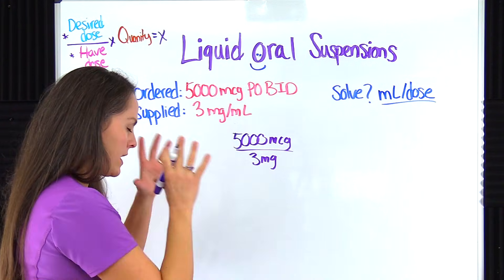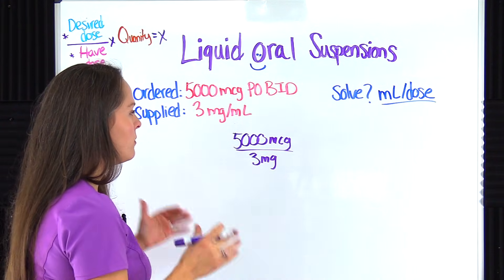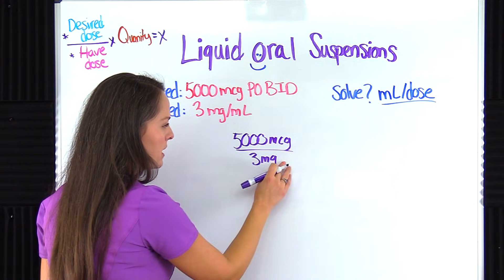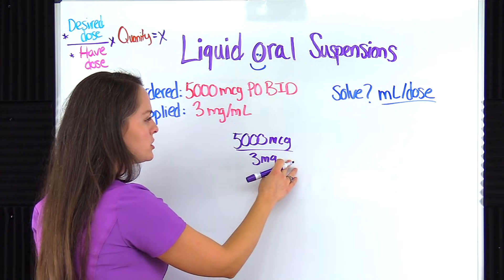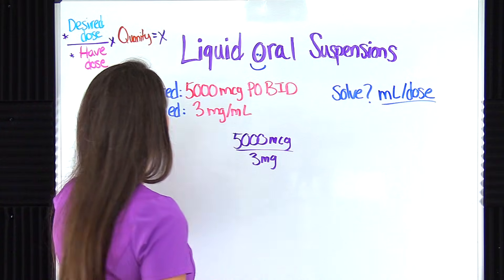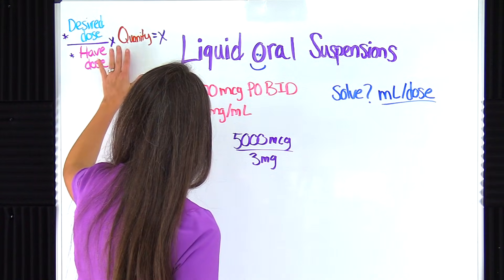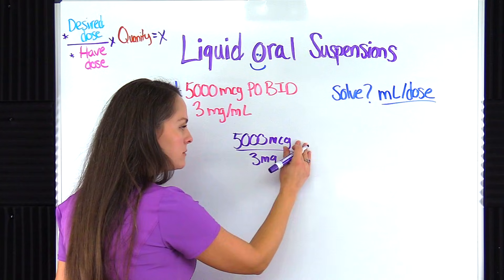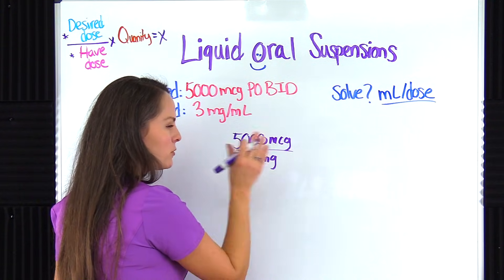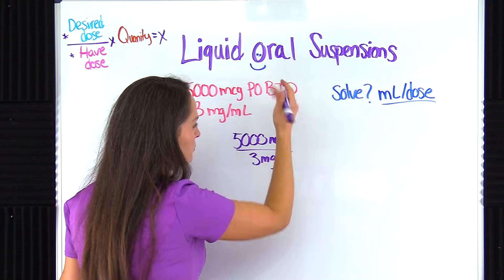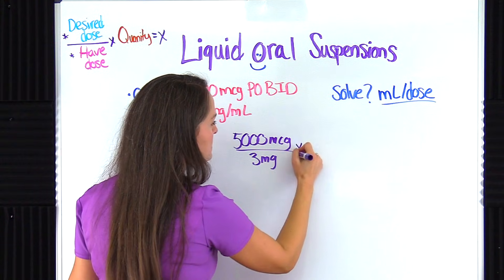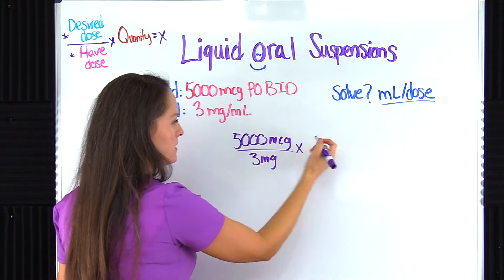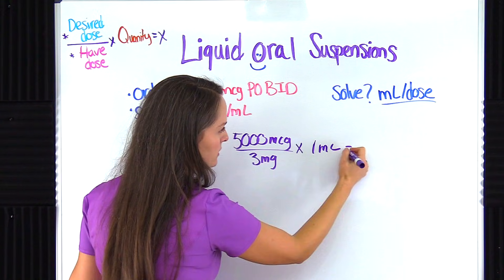Whenever you use this method, always make sure the units of measurement match up. If they do not match up, you've got to do a little converting before you can continue solving the formula. Right now we have micrograms on top and milligrams on the bottom — they do not match. We'll address that shortly. We're going to multiply by the quantity, which is 1 milliliter, because that's our volume. That equals x. That's step one.